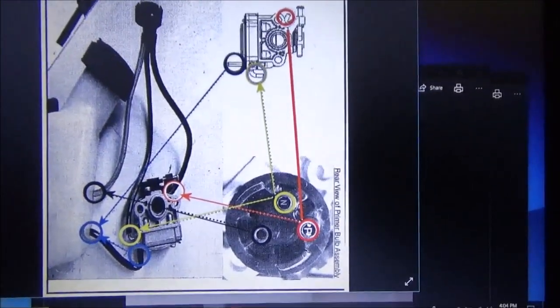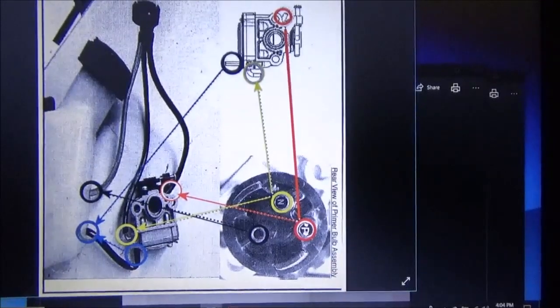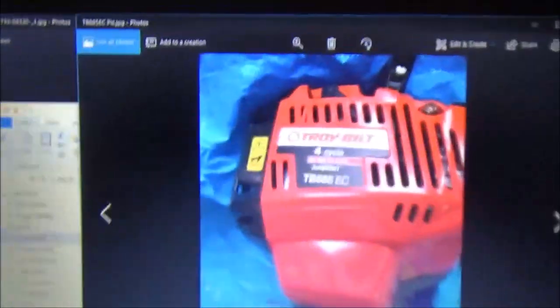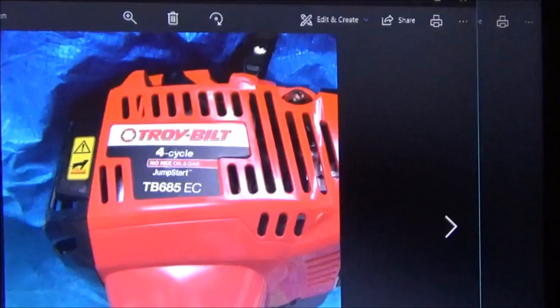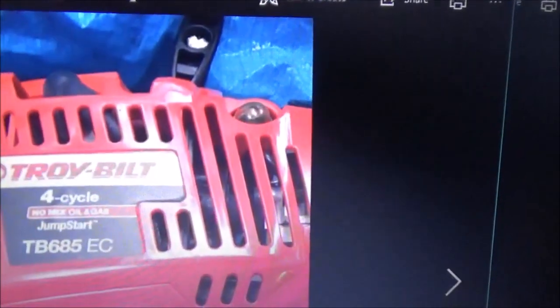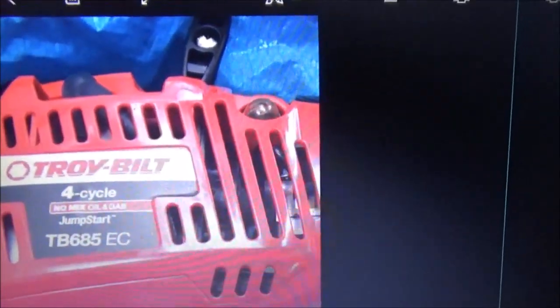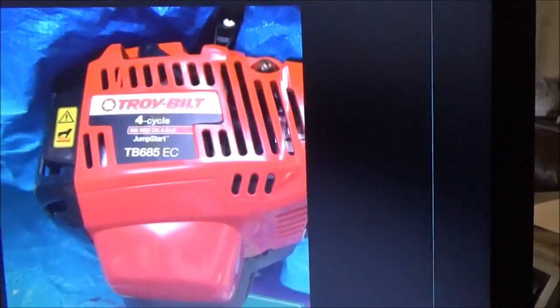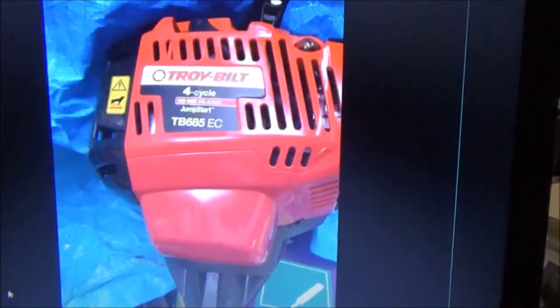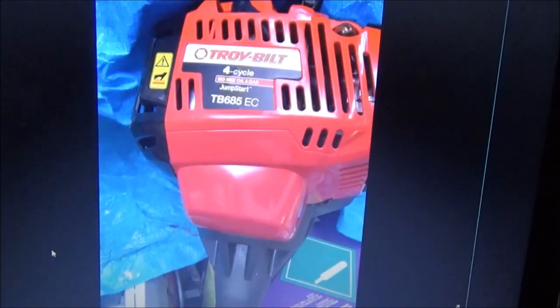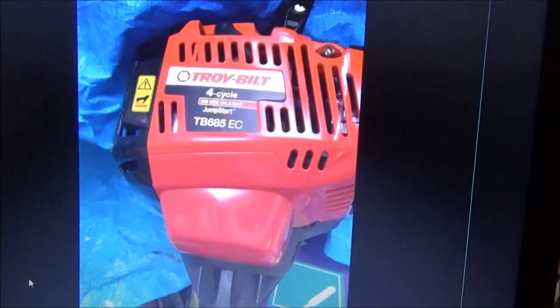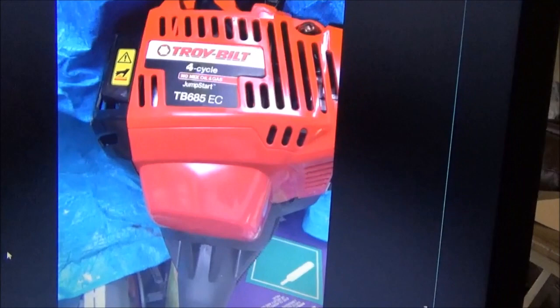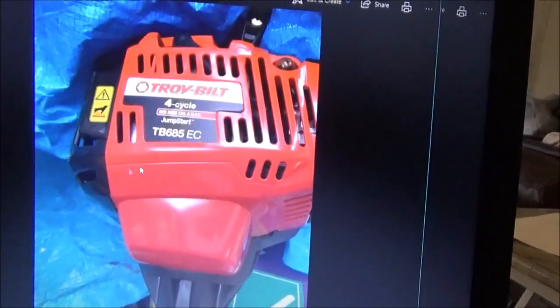Again, this is for Troy Built TB685EC. It looks like this. You see the nameplate right there, and there's the primer bulb. So if you have this weed eater and you need to change the primer bulb, or if you need to change the gas lines, and you don't mark them or take a picture of them before you do, this is how you put them back on.